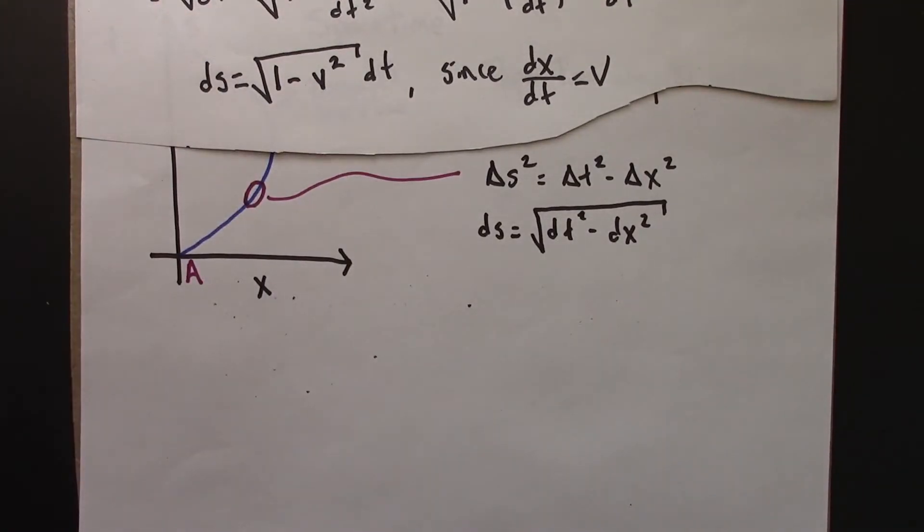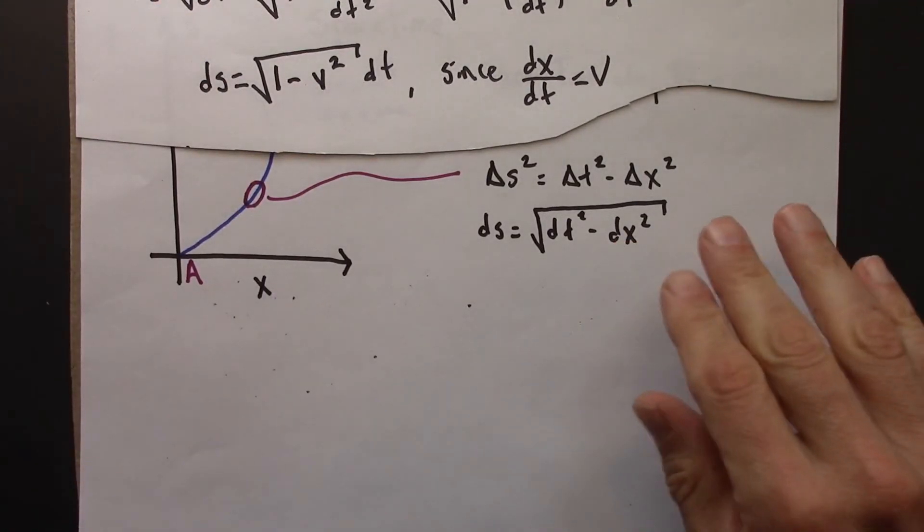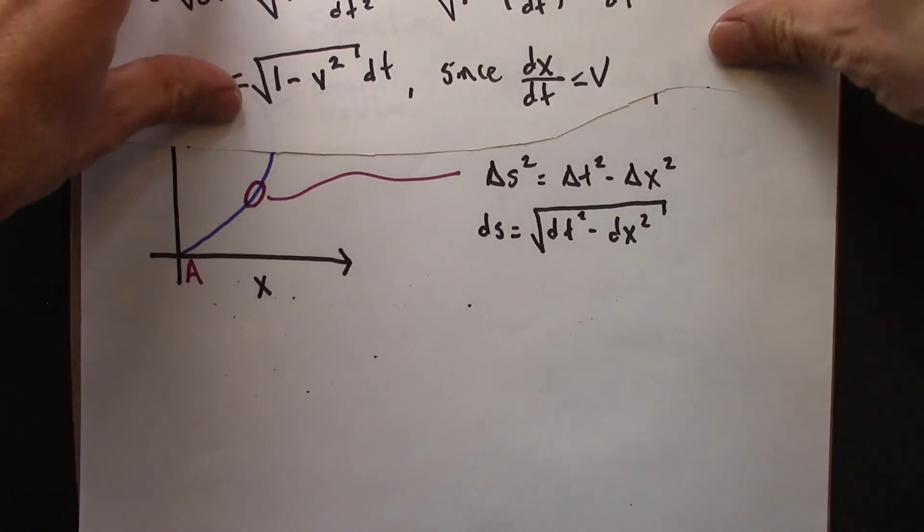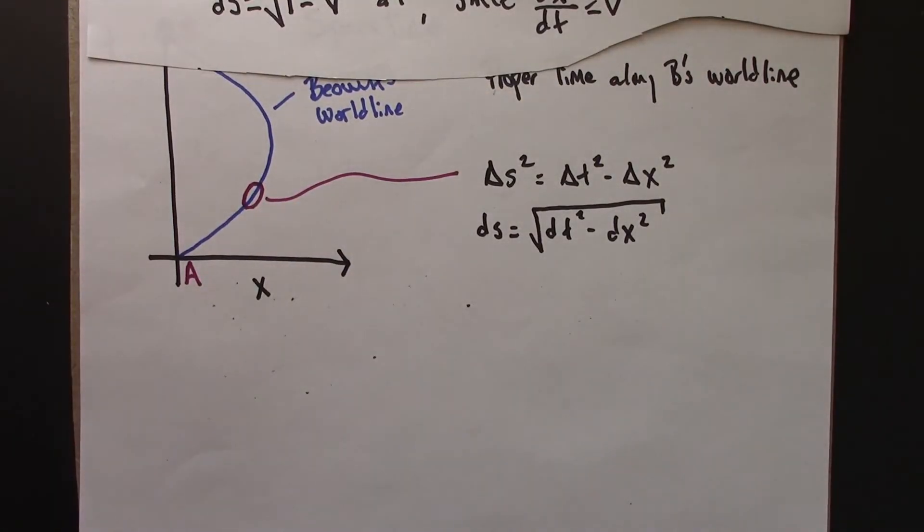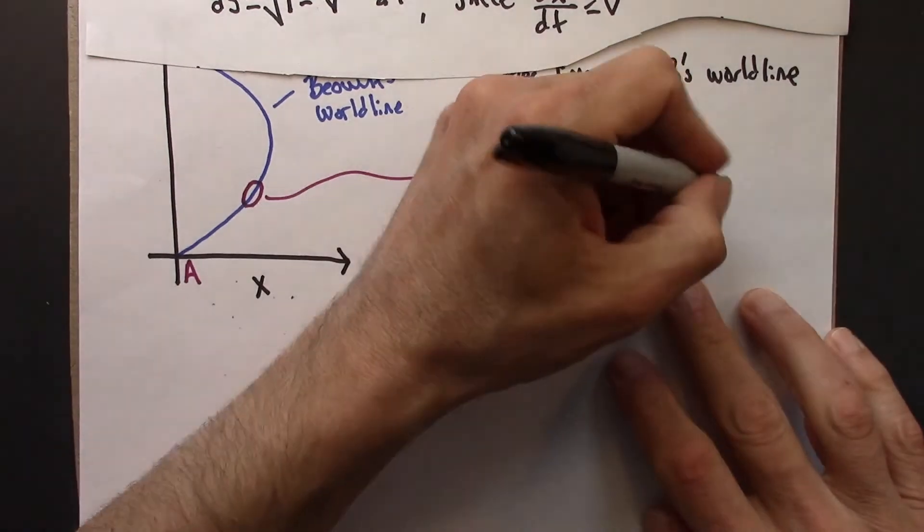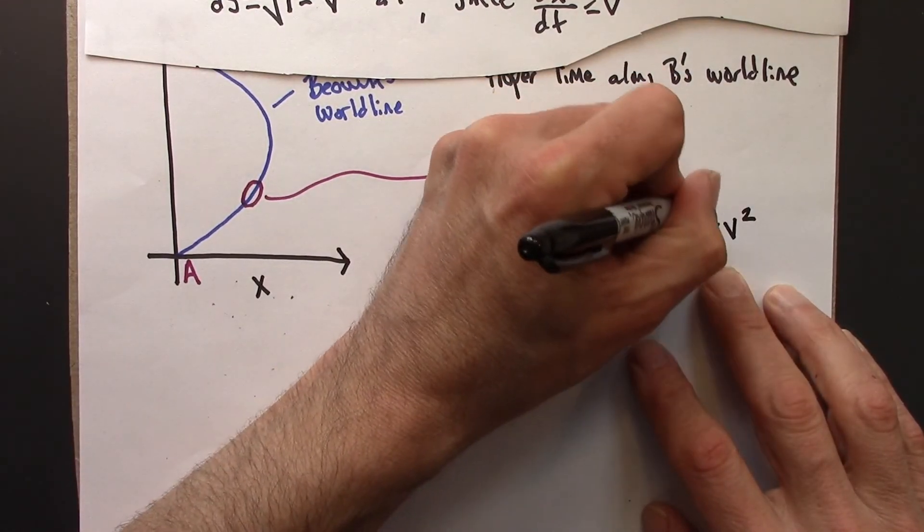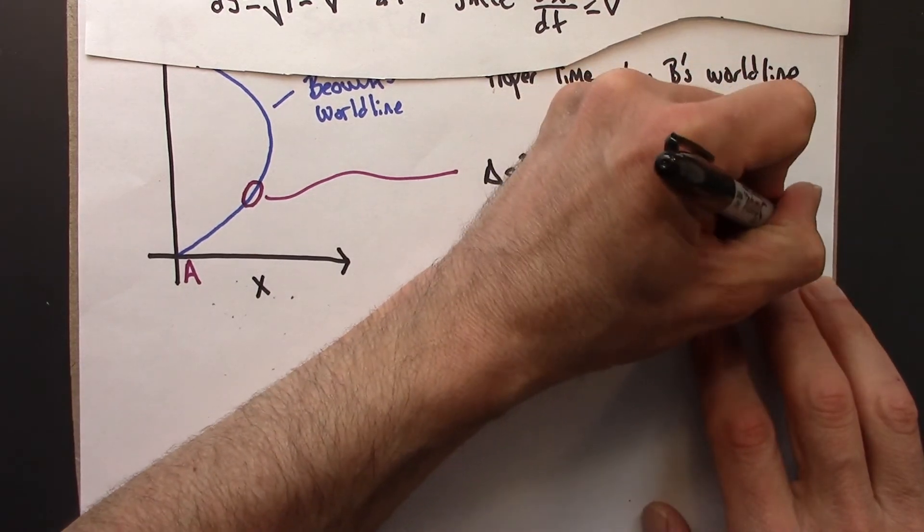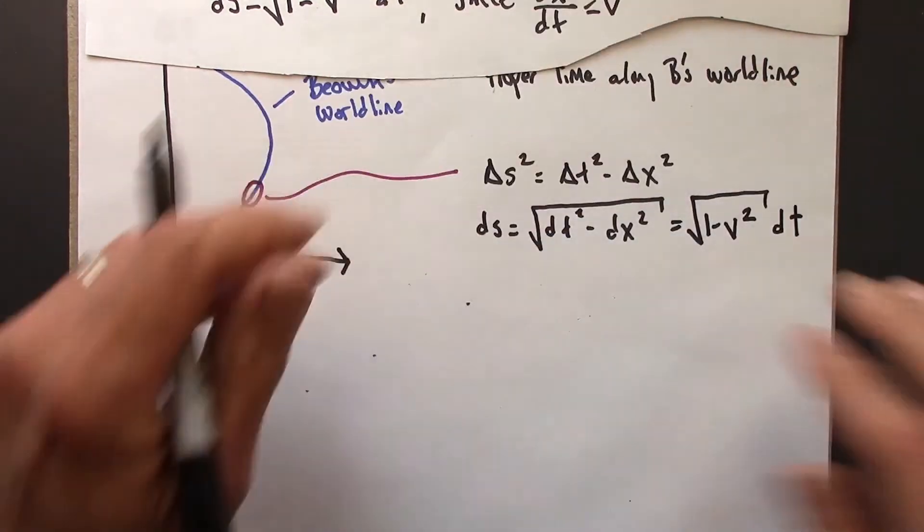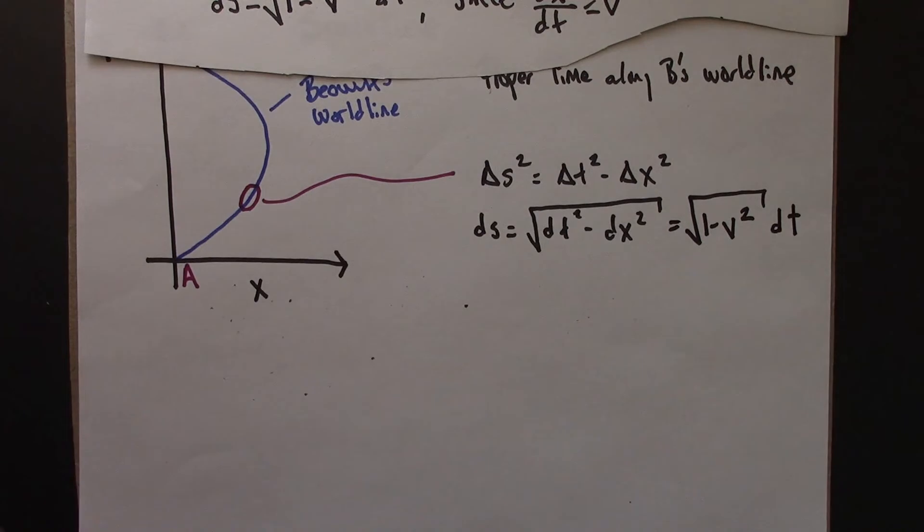Let me copy this result here: 1 minus v squared dt. So now we can do like we did before.